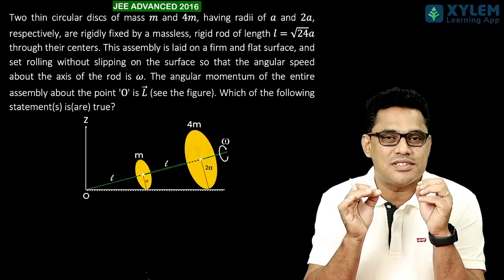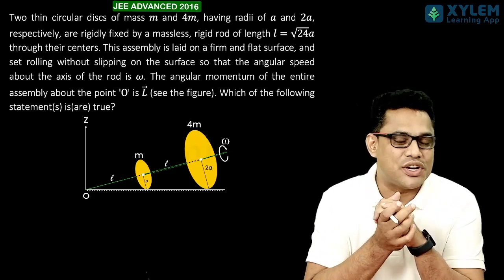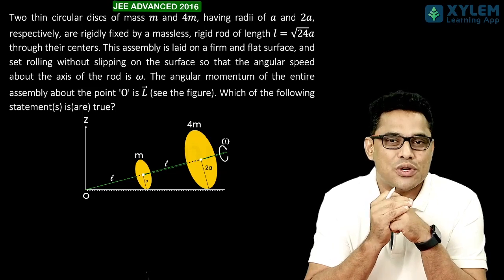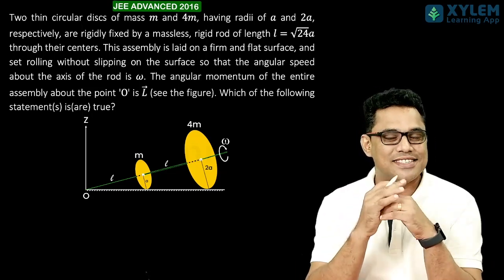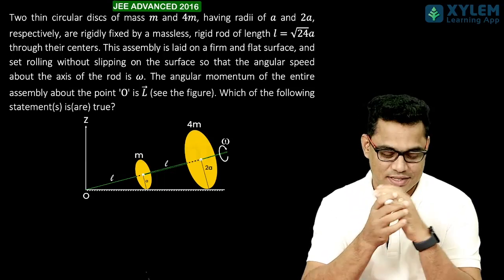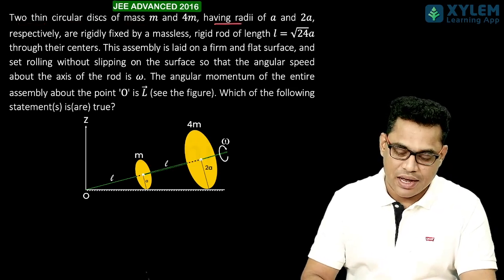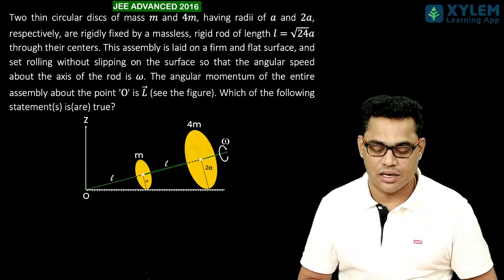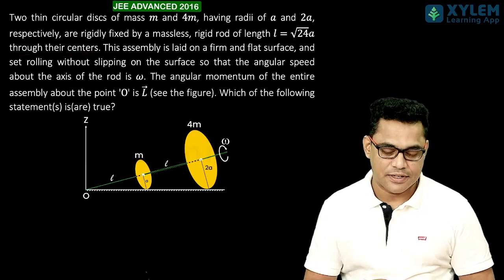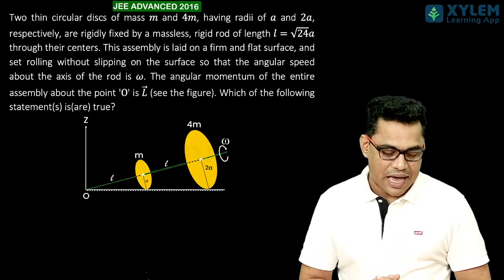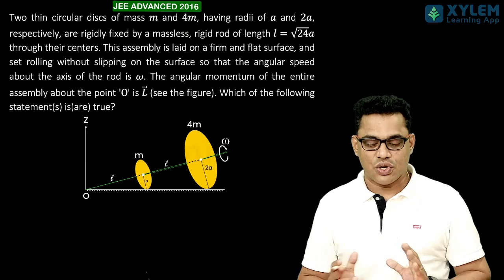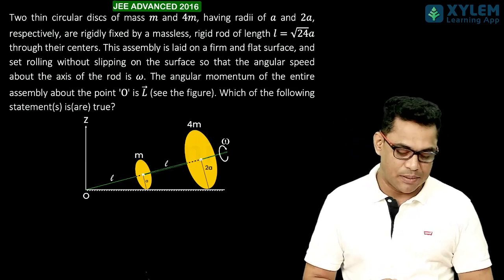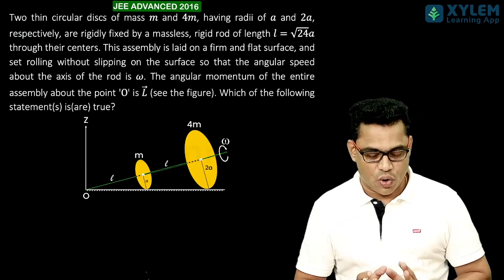Hello children. Here I am going to solve the most difficult question which has ever been asked in the history of JEE Advanced Examination. I am doing it as a tribute to all the students who are going to write JEE Advanced Exam 2022, which is going to be held day after tomorrow. I am really happy and excited to present this before you. Let me read the question once. Two thin circular discs of mass m and 4m having radii a and 2a respectively are tightly fixed by a massless rigid rod of length L equal to root 24a through their centers. This assembly is laid on a flat surface and set rolling without slipping so that the angular speed about the axis of the rod is omega. The angular momentum of the entire assembly about the point O is L. Which of the following statements is correct?